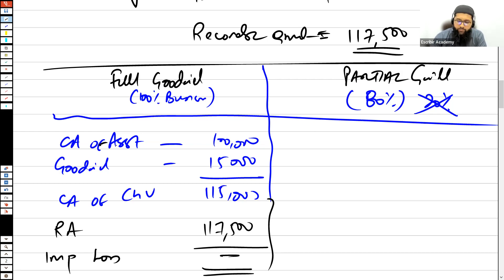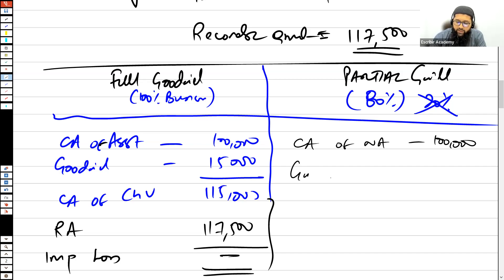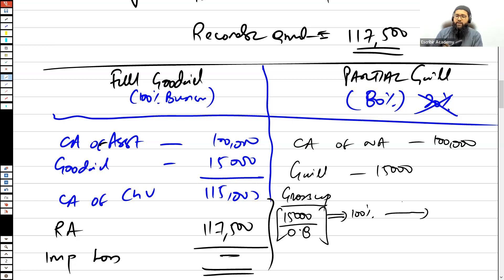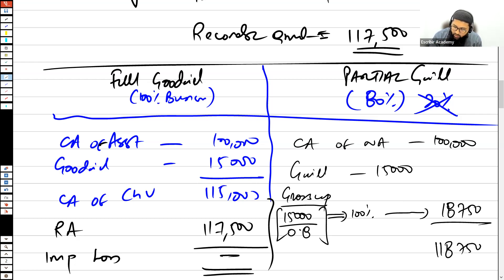Now, if we talk about partial goodwill — the partial goodwill of $15,000 is only for 80% of the business; the remaining 20% is not represented. So what you need to do is gross up the goodwill: 15,000 divided by 0.8 equals $18,750. This gives you the goodwill for 100% of the business, and hence the total carrying amount of the whole business becomes $118,750.